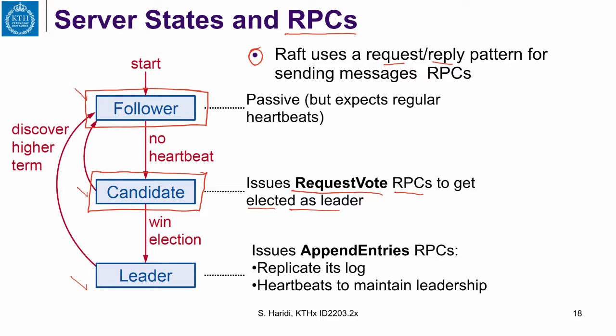Eventually one candidate should win. The winner will be the node with the highest term and the highest entry index — which in Paxos terminology means the one that has the longest sequence with the highest accepted round number. If a leader, while receiving heartbeats, discovers a higher term, meaning somebody else became a leader with a higher round number, it goes back to become a follower. The same happens for a candidate: if it discovers a higher term, it becomes a follower. This information about the highest known term is always propagated in every RPC in the system.